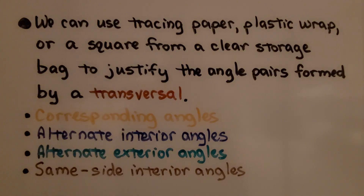We can use tracing paper, plastic wrap, or even a square from a clear storage bag to justify the angle pairs formed by a transversal.